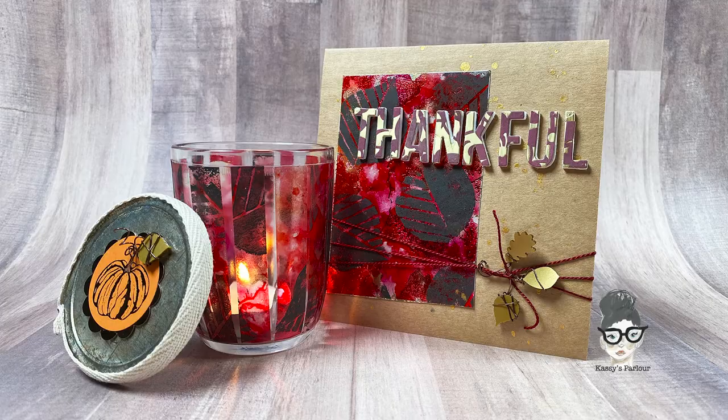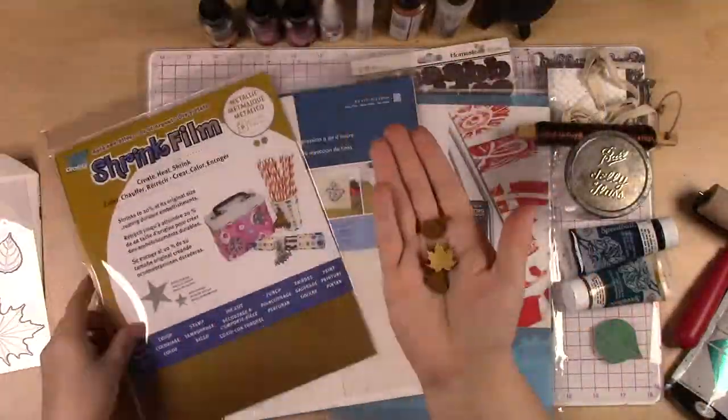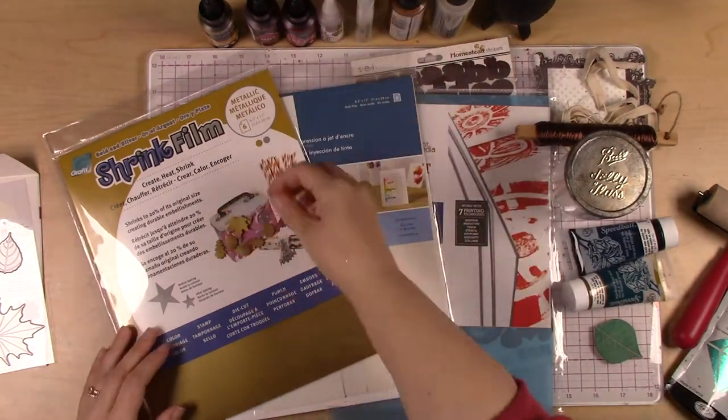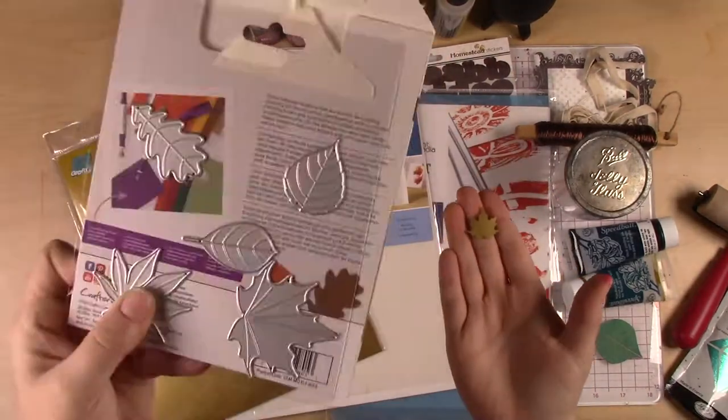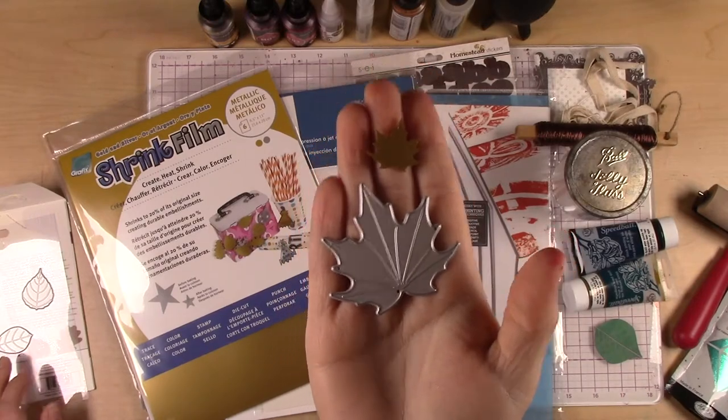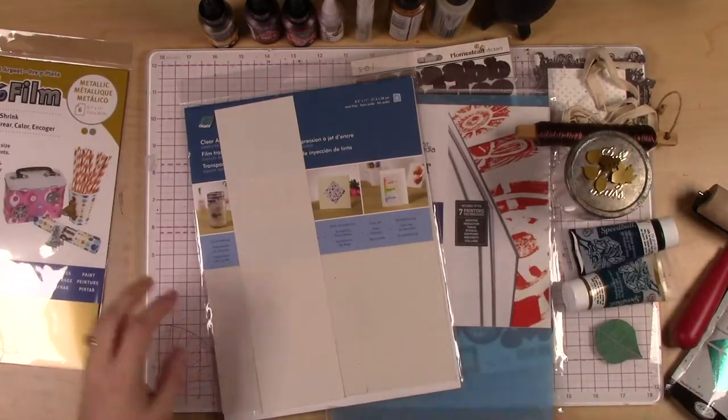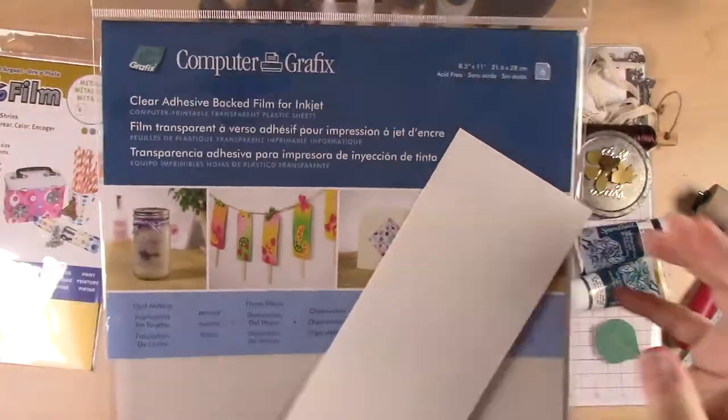Hi, it's Cassie with Cassie's Parlor and we're going to make a votive holder and card set. I'm so excited. We're going to start with some metallic shrink film from Graphix in gold, and you'll see here the die and how it shrinks so you can see the difference in the size. We're going to set those aside and use them a bit later.